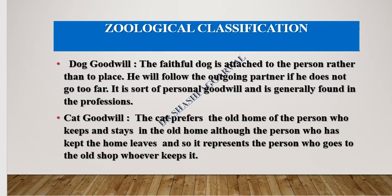Under the geological classification, there is dog goodwill. The dog is loyal and remains attached to the person. So if an outgoing partner leaves the firm and doesn't go too far, customers will follow that person. This is the type of goodwill attached to a person, and it is generally found in professions. Then there is cat goodwill — the cat stays attached to the old house.